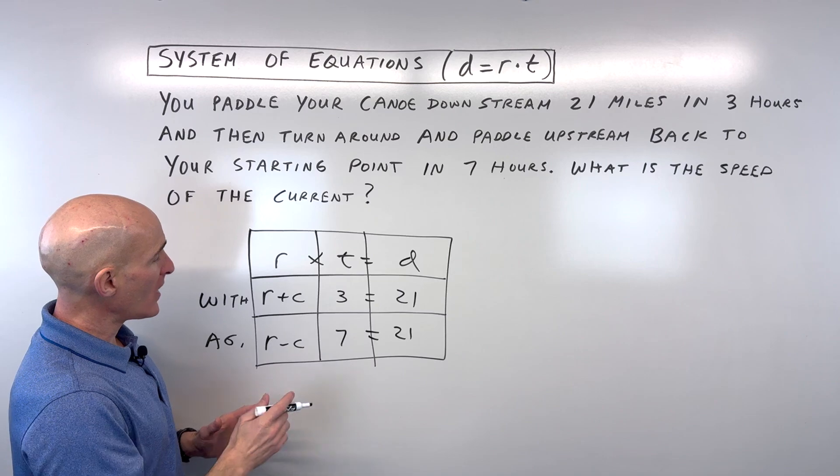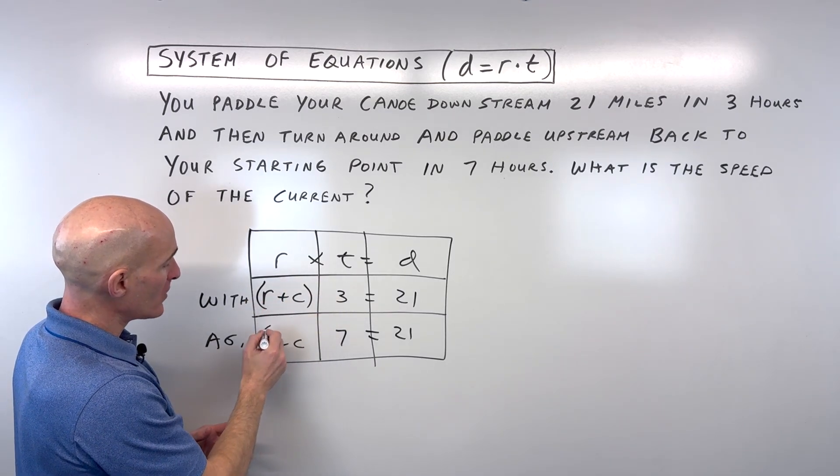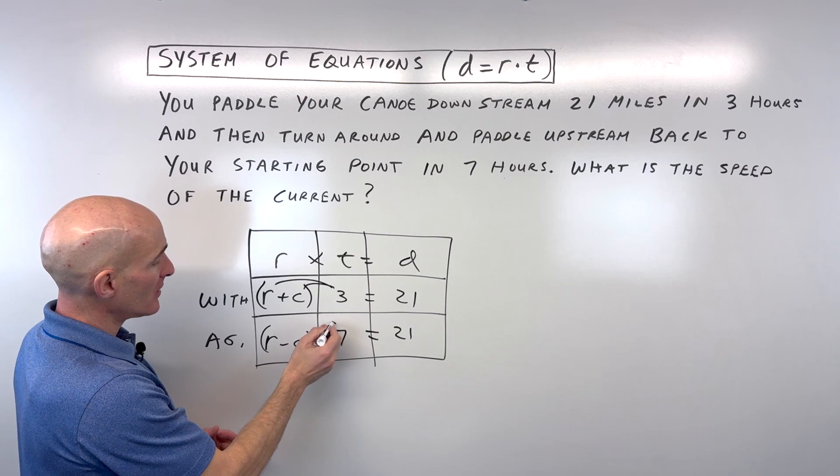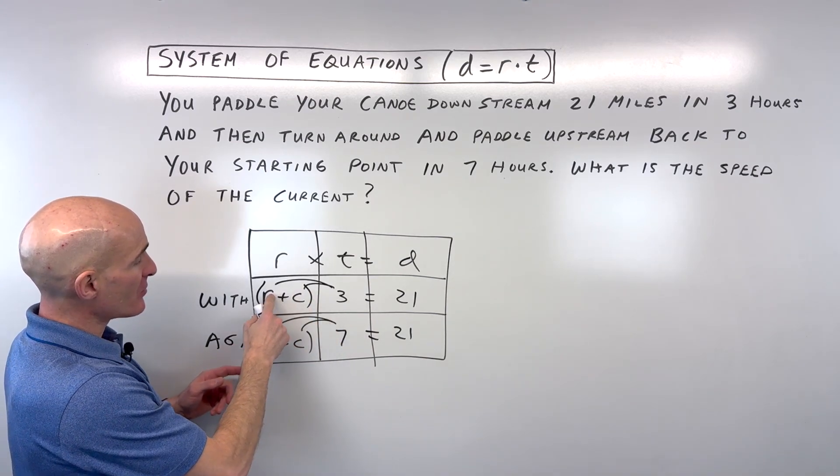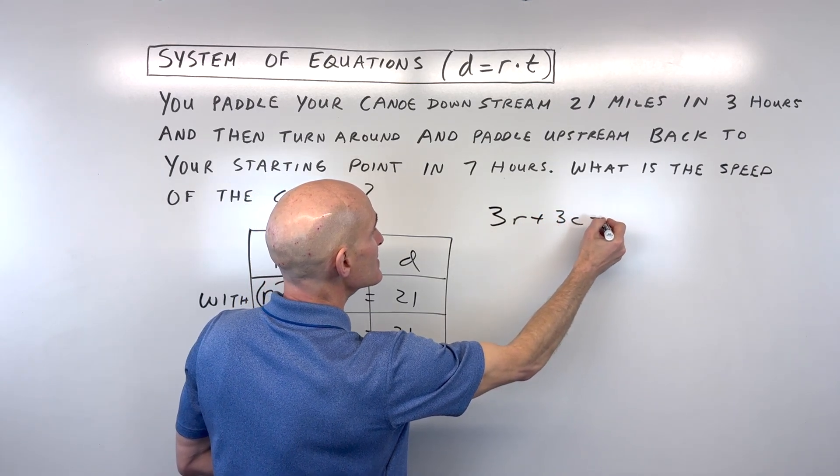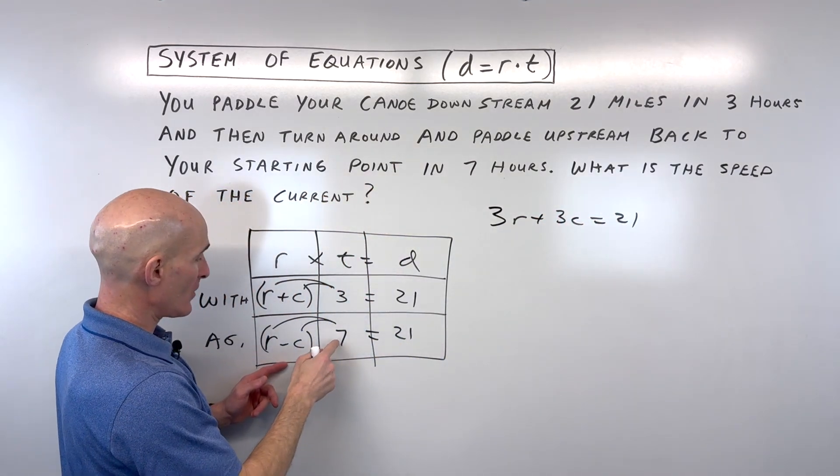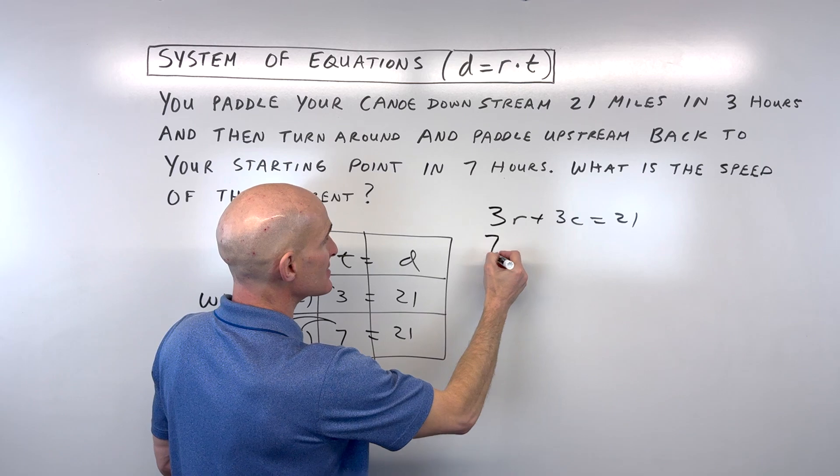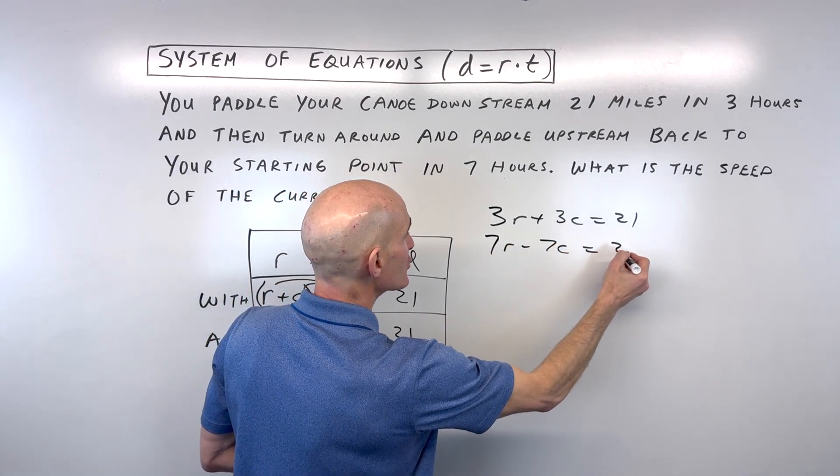So here are our two equations. We can think of this as a group, we can put it in parentheses and distribute like so. That gives us 3R plus 3C equals 21, and here we have 7R minus 7C equals 21.